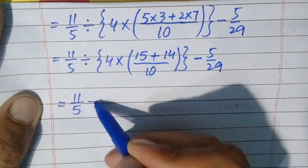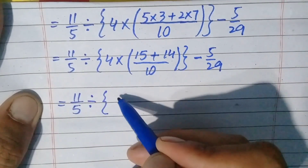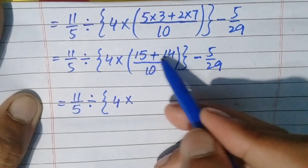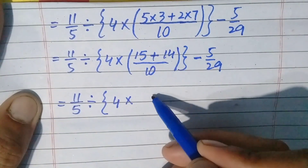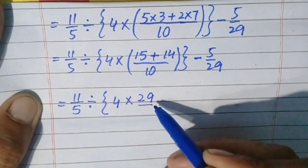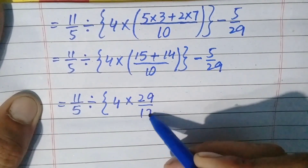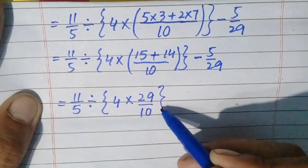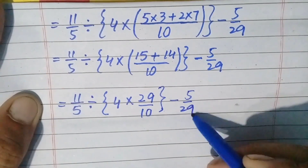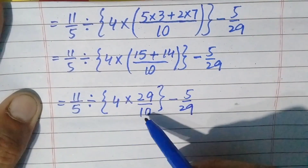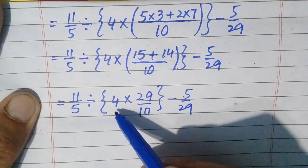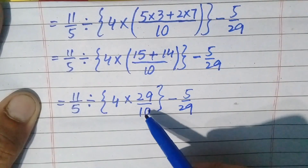Further simplify: write the remaining question — 11/5 divide, braces open, 4 multiply. Add the numbers in the numerator: 15 plus 14 is 29, write 10 in the denominator. Braces close, minus 5/29. Now we need to simplify the braces — this involves multiplying a whole number with a fraction. Remember: when multiplying a whole number with a fraction, multiply the whole number with the numerator, not the denominator.